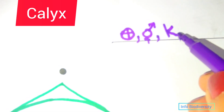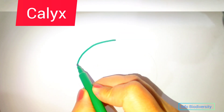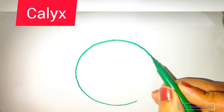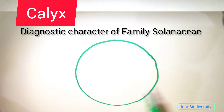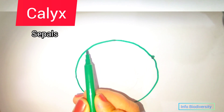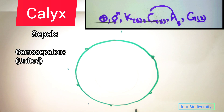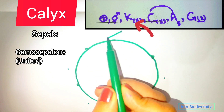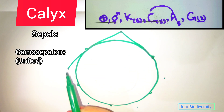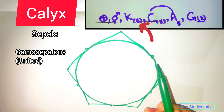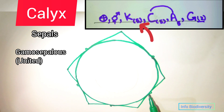The other parts of the flower are represented by K, C, A, and G. K represents the calyx, which is the outermost whorl of the flower. In family Solanaceae, the calyx is greenish in color and persistent throughout the life of the plant — this is a diagnostic feature of the family. The calyx is represented by five sepals which are united to each other, called gamosepalous. In the floral formula, the calyx is represented by five units in brackets, showing their united, gamosepalous nature.